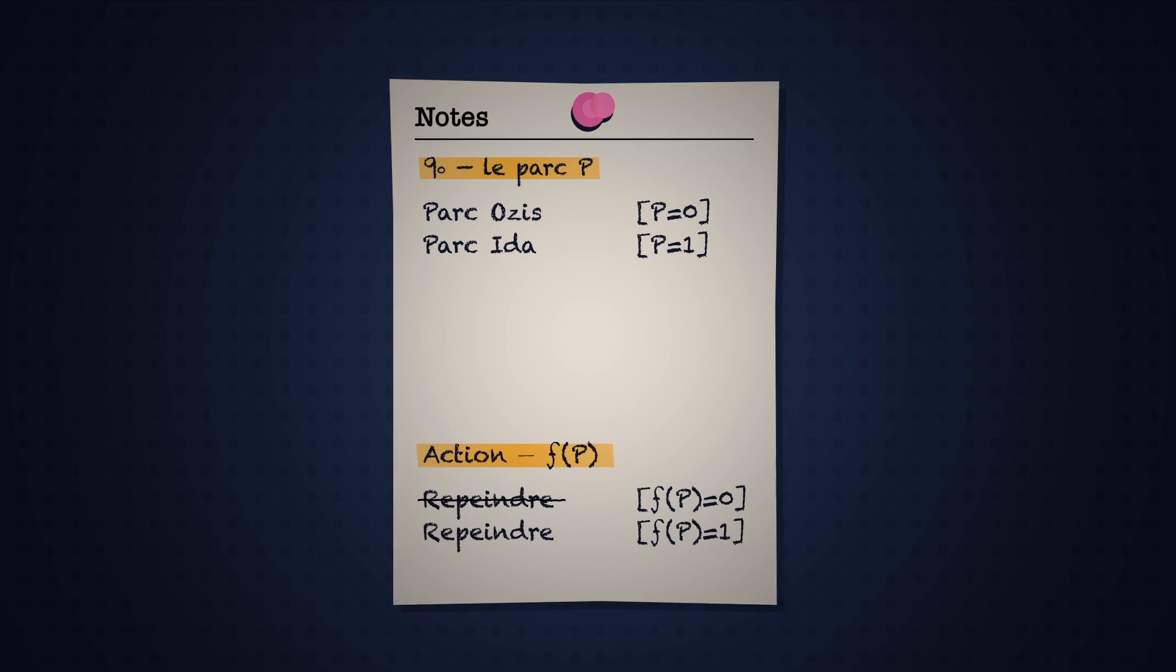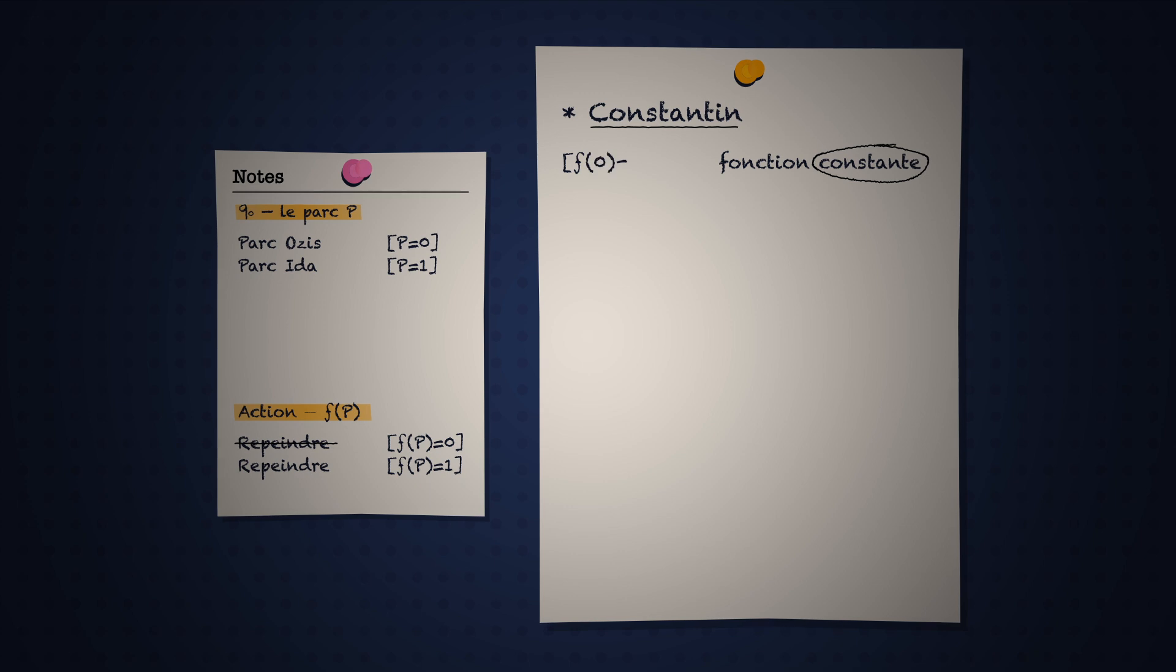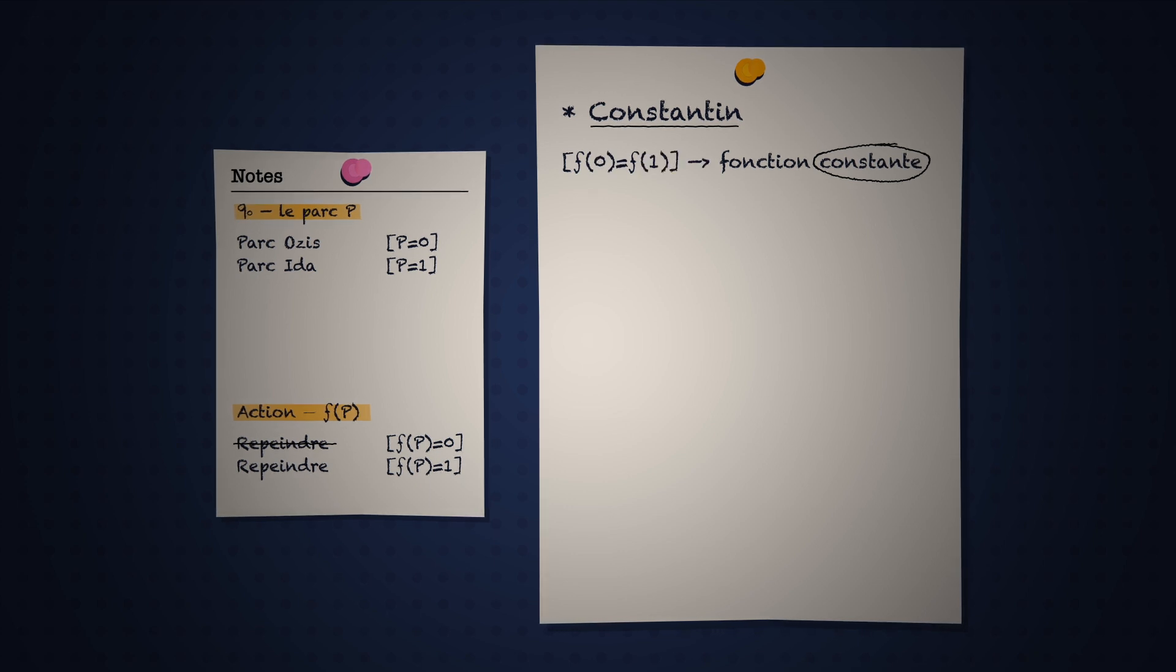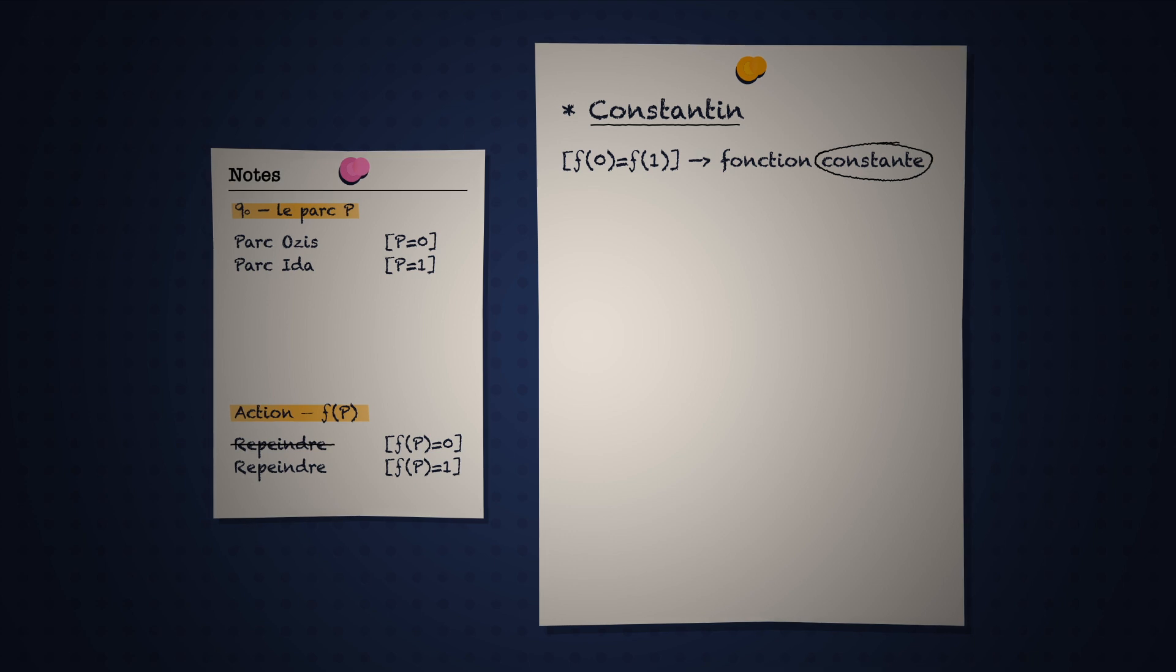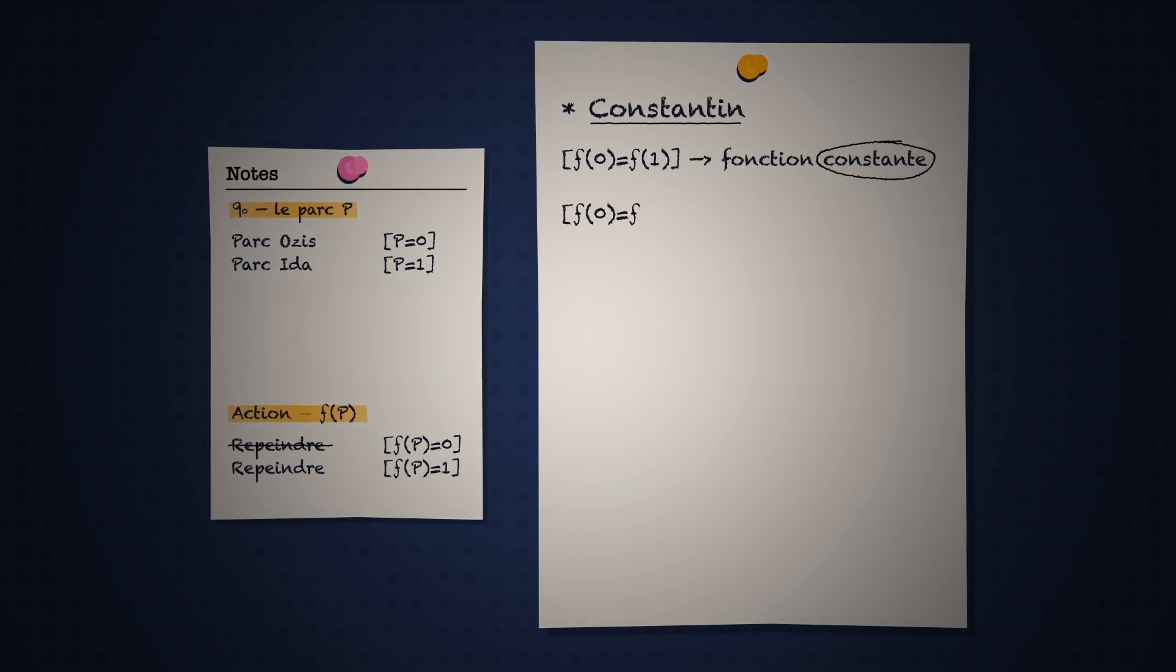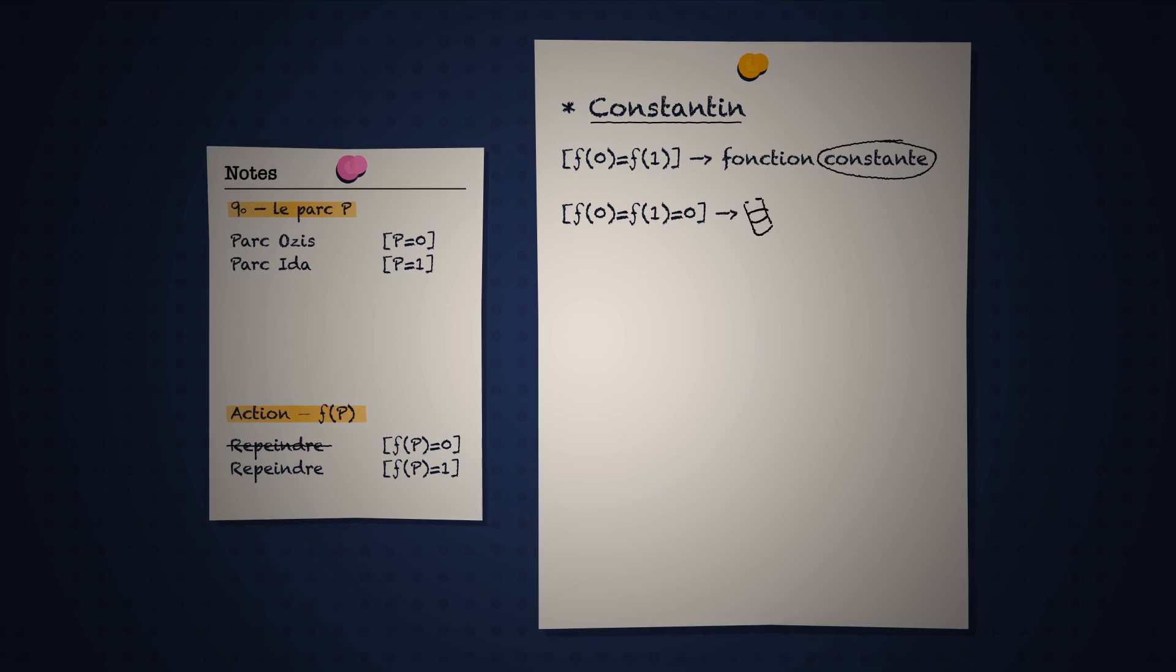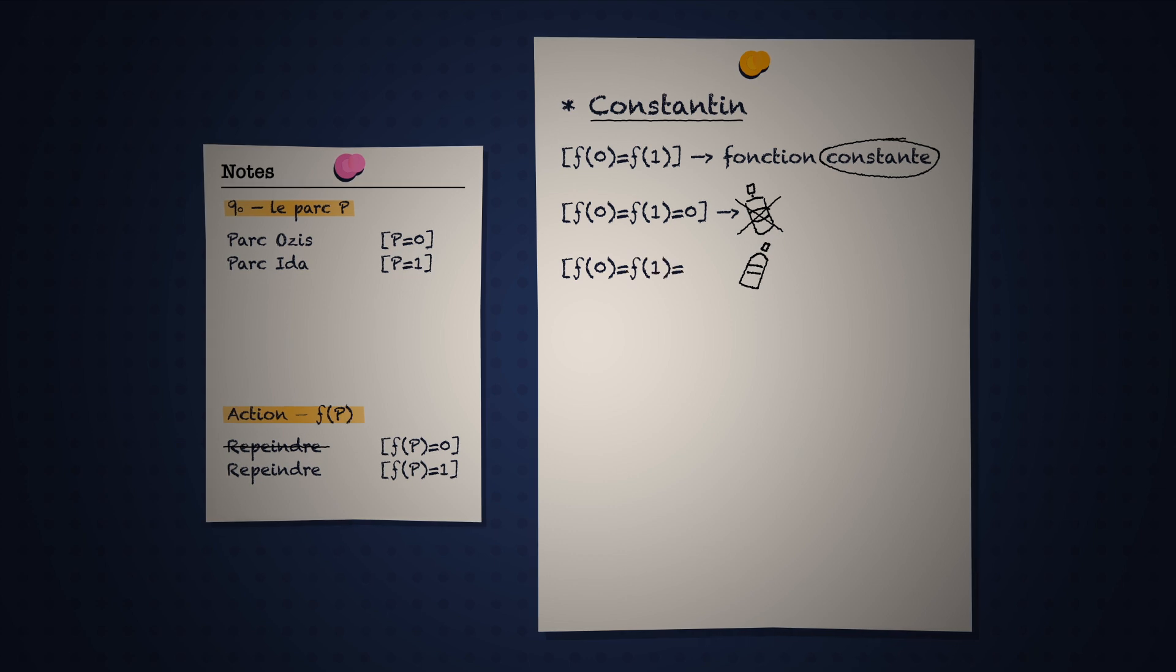Dans notre situation, Constantin utilise une fonction dite constante, c'est-à-dire que f de 0 égale f de 1. Le résultat est le même, peu importe dans quel parc se trouve la statue. Les statues ne sont pas repeintes si f de 0 et f de 1 égale 0, et elles sont toutes deux repeintes dans leur couleur opposée si f de 0 et f de 1 égale 1.